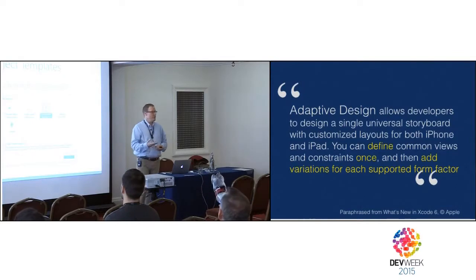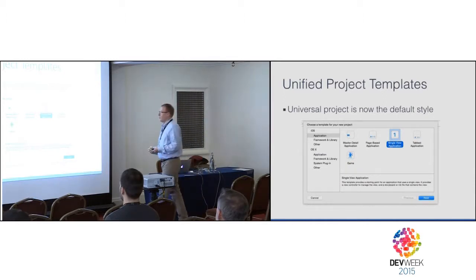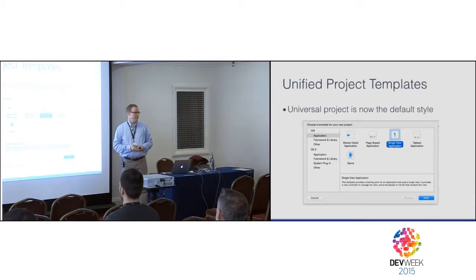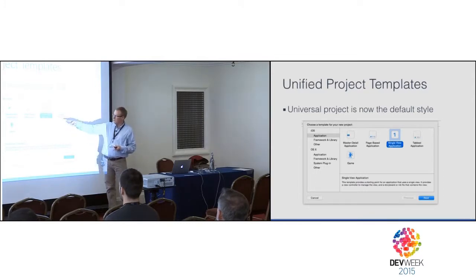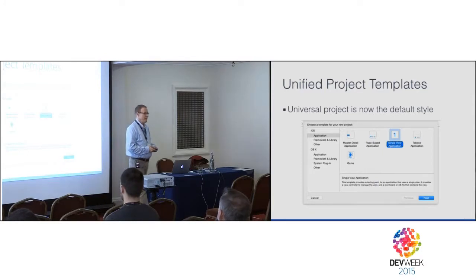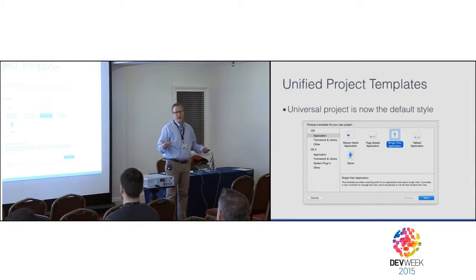So what changed? When you pull up Xcode 6, one of the things you'll notice is there are no longer universal projects. When you create a project, you will not see iPhone versus iPad anymore. Instead, you'll just see the specific project types: master detail, page base, single view, tab, and a game application. There's no evidence of an iPhone app, an iPad app, or a universal app anymore — it's just an app.